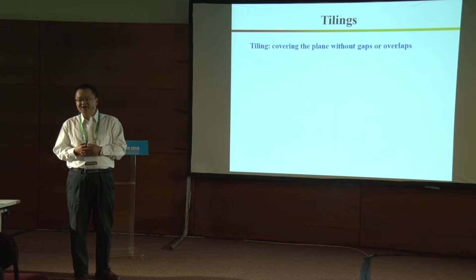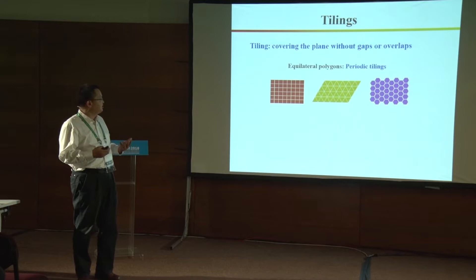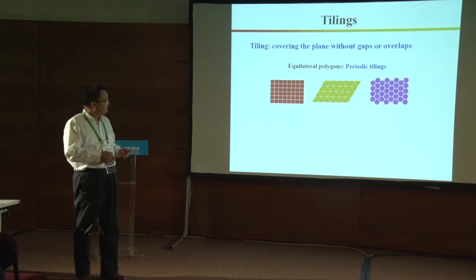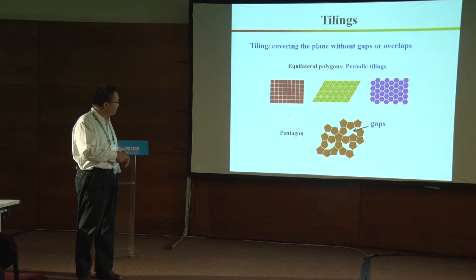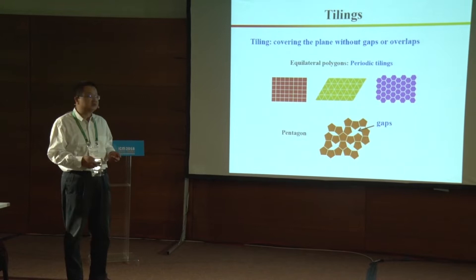First, I'm talking about the background on tilings. What is a tiling? This is the covering of the plane with no gaps or overlaps. For example, this is the periodic tiling using regular triangles and hexagons. But if you use the pentagon, you can find gaps — there's no way to avoid gaps. This is the tiling problem.